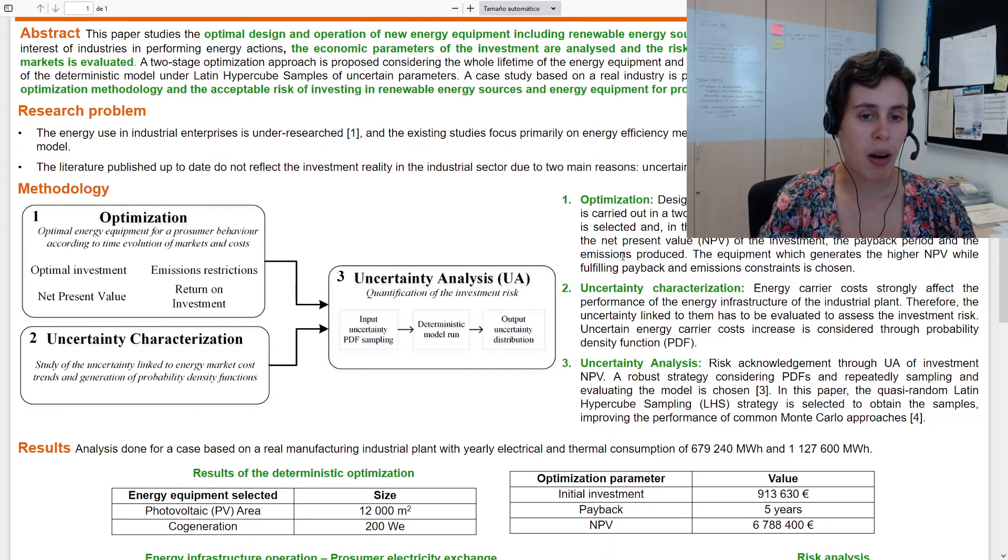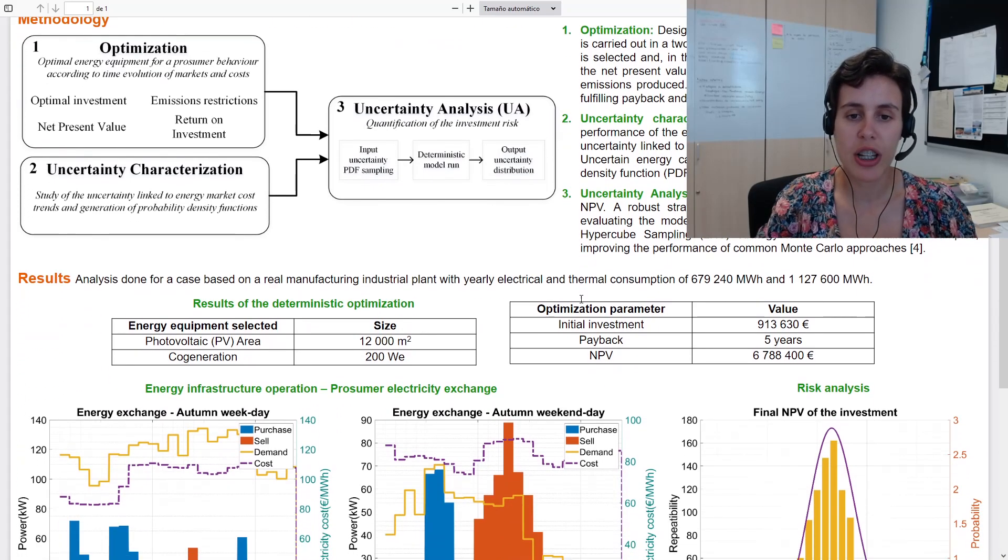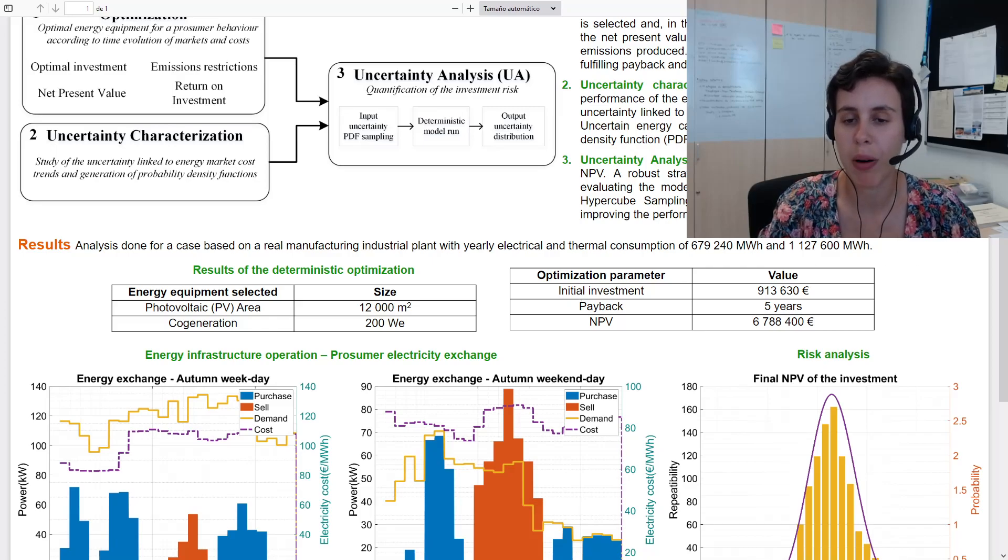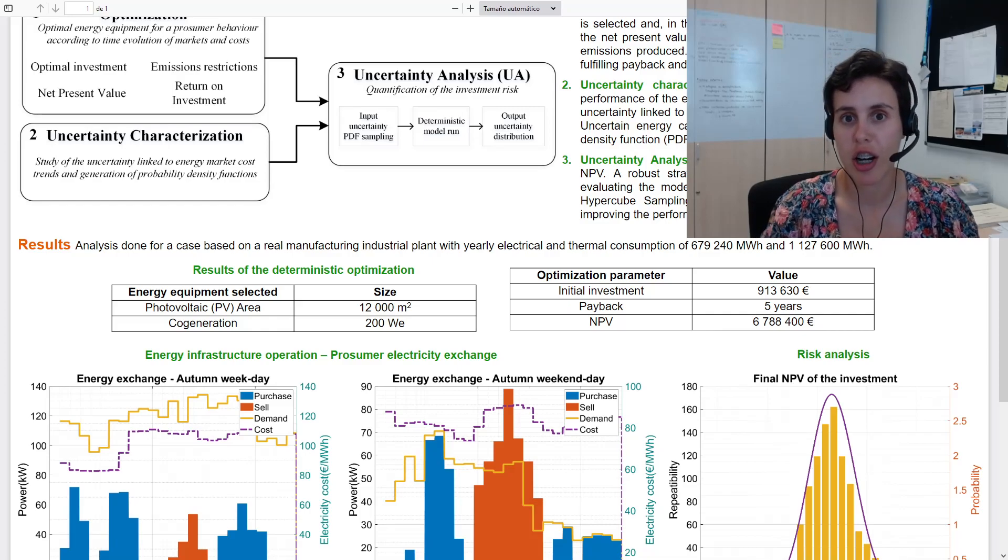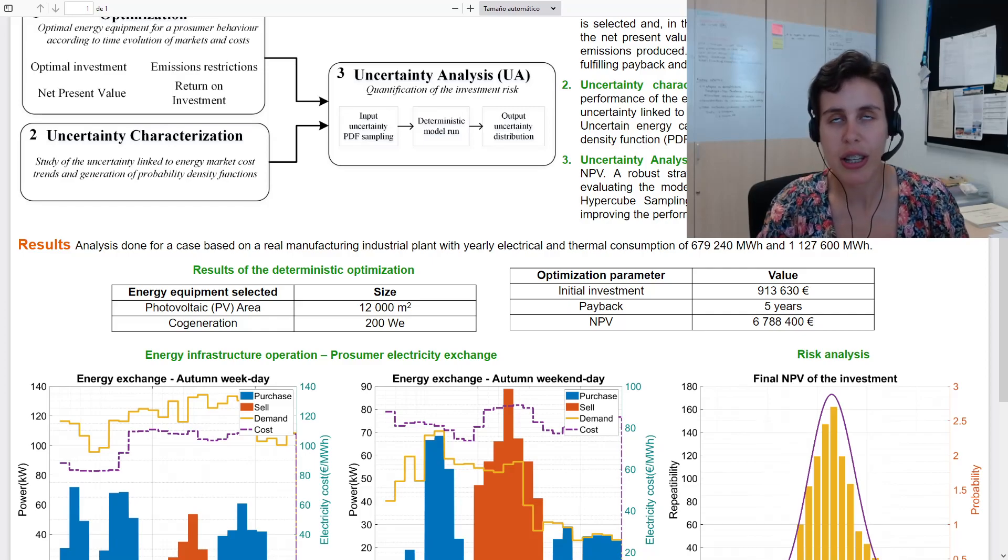The methodology is applied here to a case study based on a real manufacturing plant. With the characteristics and constraints of the analyzed plant, the equipment selected to install is a photovoltaic system that covers all the available area possible for its installation and a cogeneration. The required investment is recovered in five years, and the net present value is almost more than seven times the initial investment required.